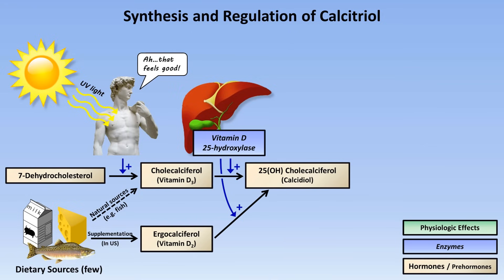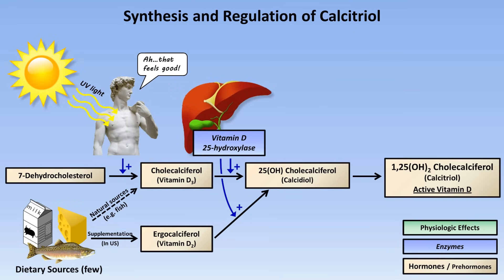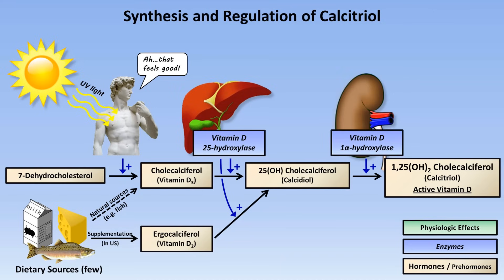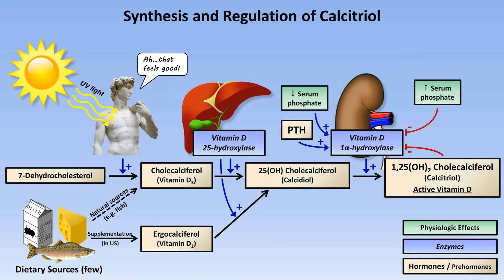The conversion of vitamins D2 and D3 to calcidiol occurs in the liver with the assistance of an enzyme usually called vitamin D 25-hydroxylase, but occasionally also known as cytochrome P450-2R1. The final and most important actively regulated step is when calcidiol is converted to 1,25-dihydroxycholecalciferol, also known as calcitriol or active vitamin D. This occurs in the kidneys and requires vitamin D 1-alpha-hydroxylase, also known as cytochrome P450-27B1. 1-alpha-hydroxylase is inhibited by calcitriol itself — a form of negative feedback — and its activity is increased by PTH. Low serum phosphate also stimulates this enzyme, while high serum phosphate inhibits it.